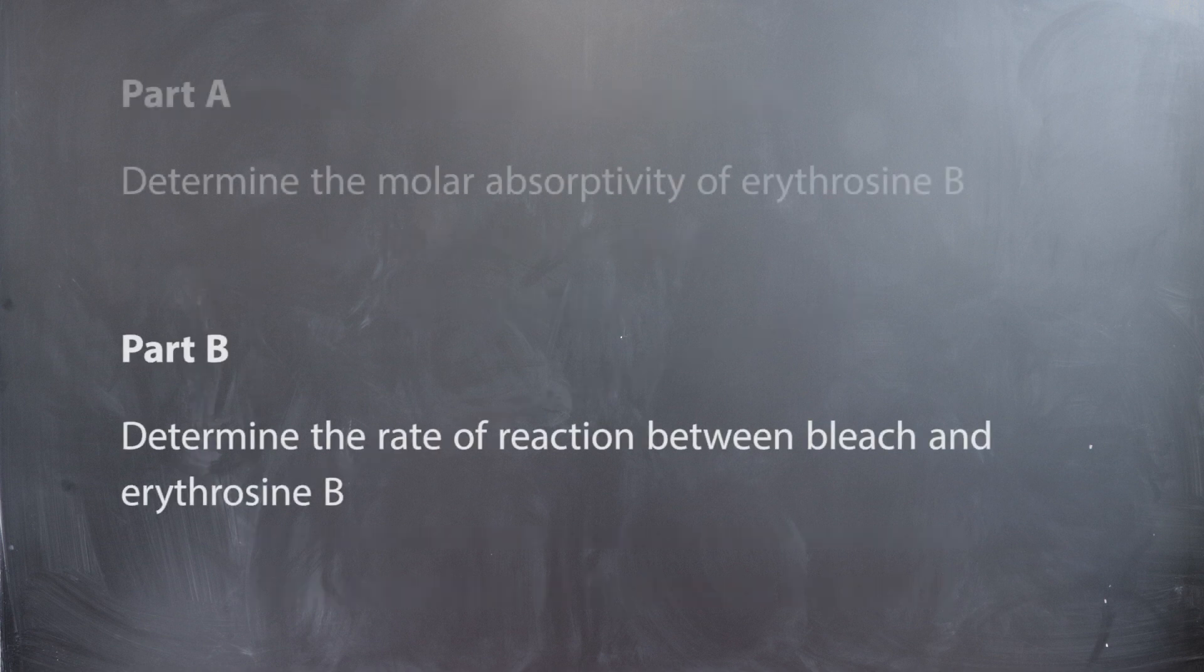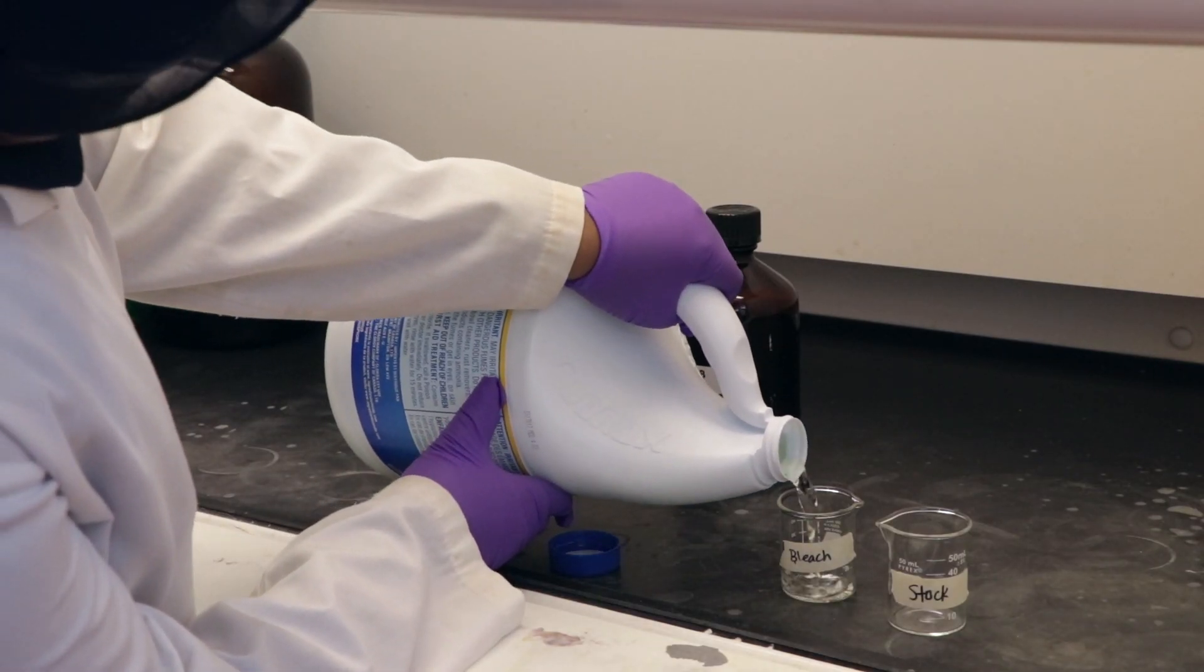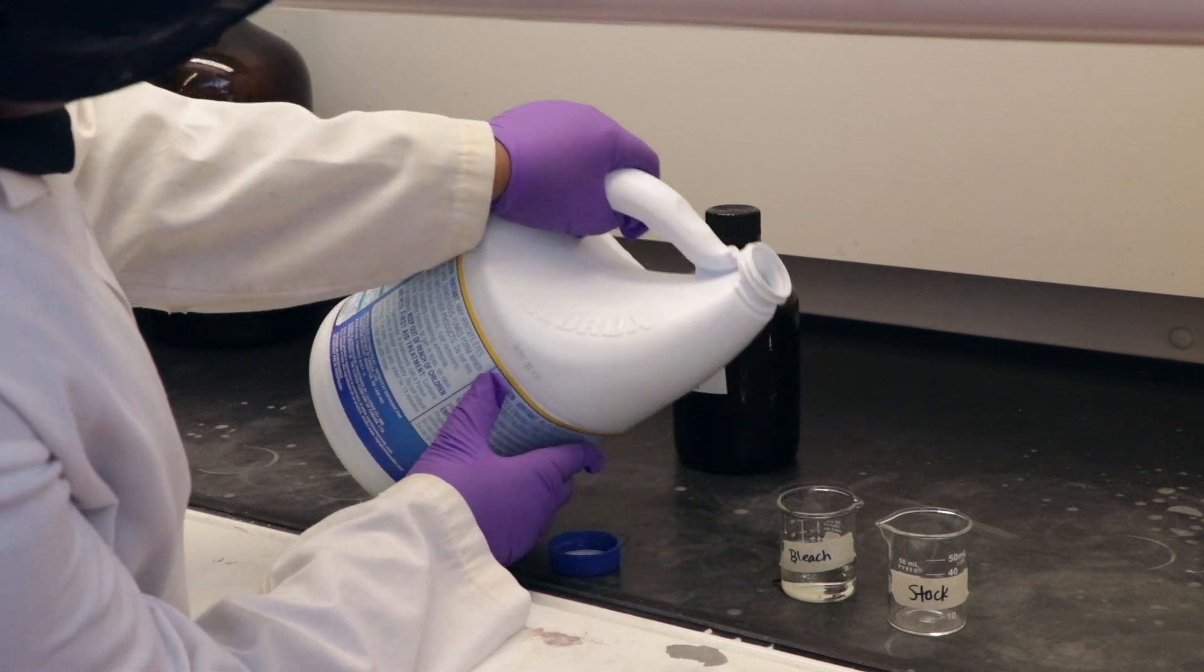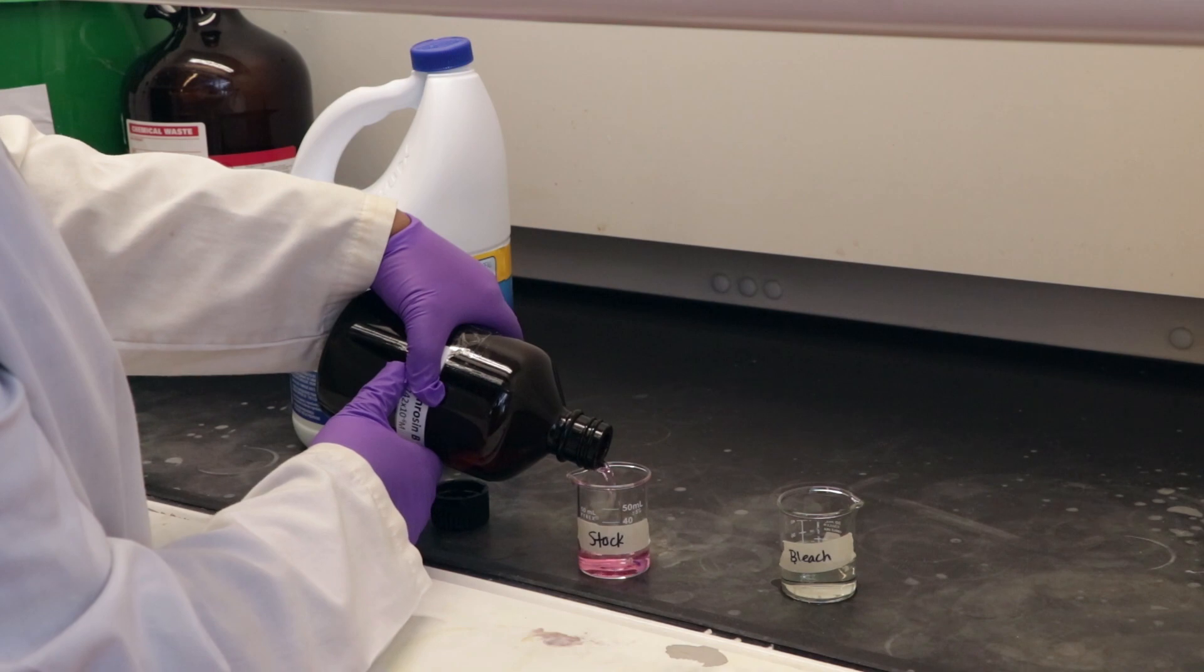We will now move to Part B where we will use the molar absorptivity of erythrosine B to determine the rate of reaction between erythrosine B and bleach. Obtain approximately 30 milliliters of bleach and 30 milliliters of stock from the TA fume hood. Make sure to record the concentration of bleach that you are using.